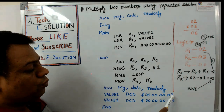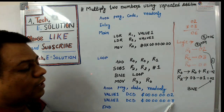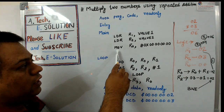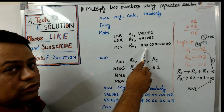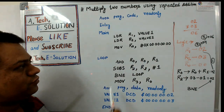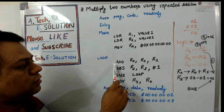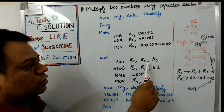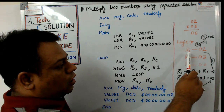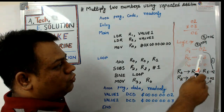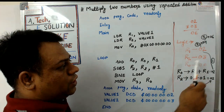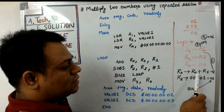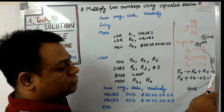So we have to multiply 0x02 by 0x03. We take another register r0, initialized to 0x00. At this point, r1 is 0x02, r2 is 0x03, and r0 is 0x00. The first time r0 is added to r1, so we will get a result of 0x02.